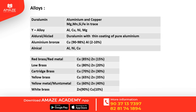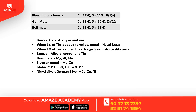Bronze is an alloy of copper and tin. Phosphorus bronze is an alloy of copper, tin, and phosphorus. Gun metal is an alloy of copper, tin, and zinc. Adding 1% tin to yellow metal gives naval brass. Adding 1% tin to cartridge brass gives admiralty metal.